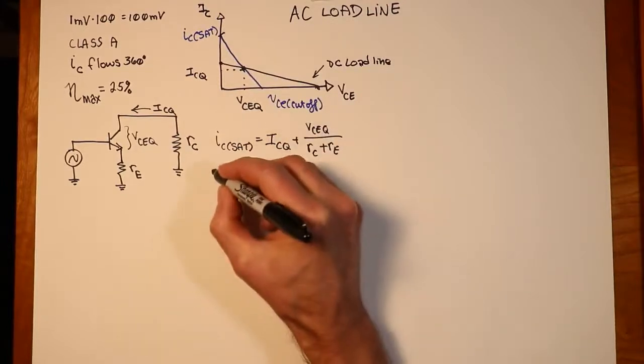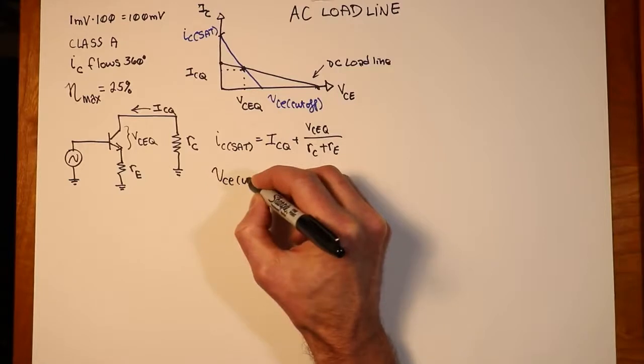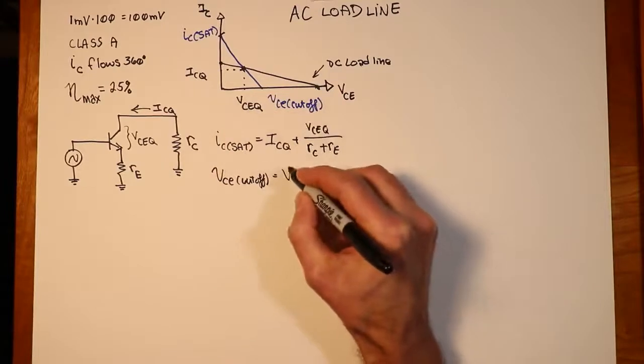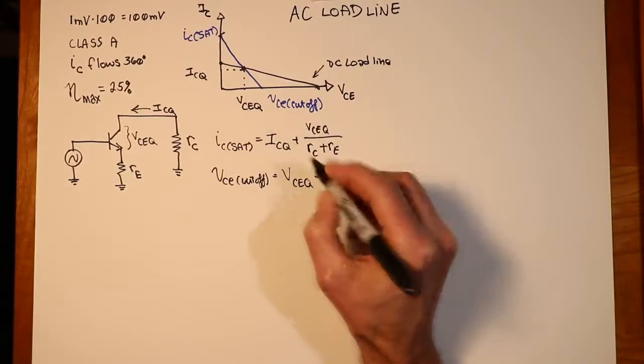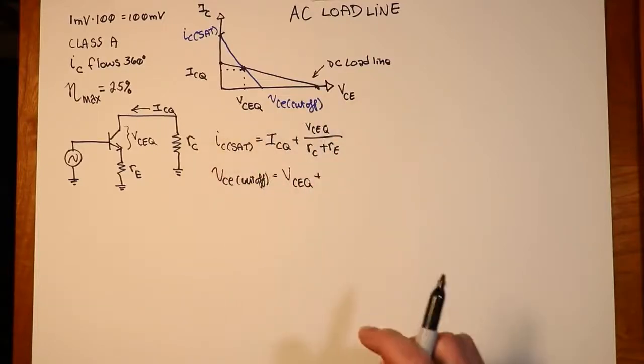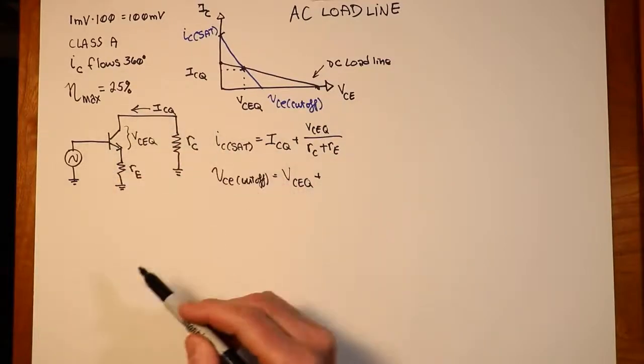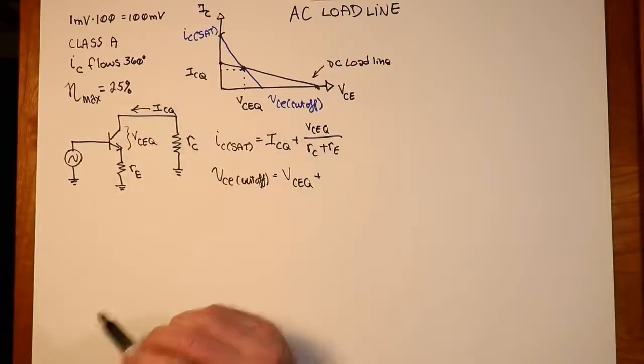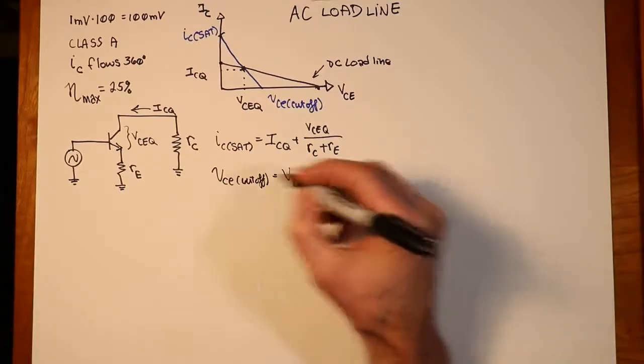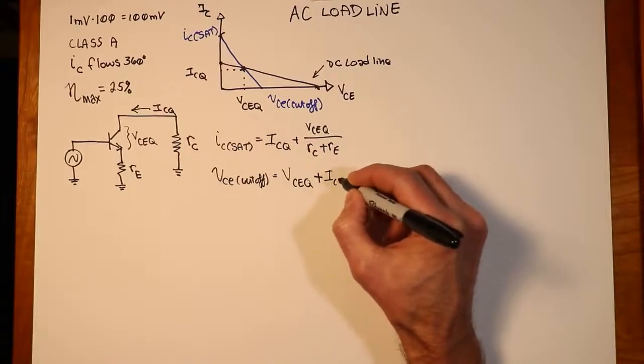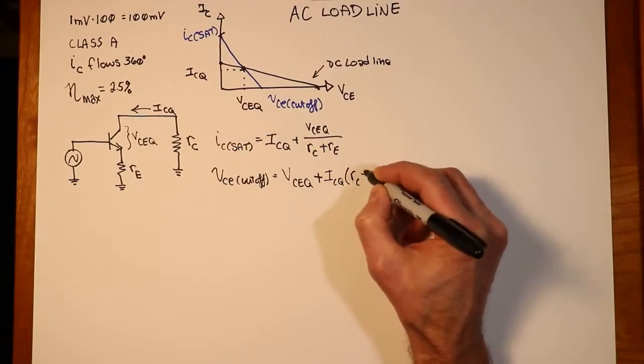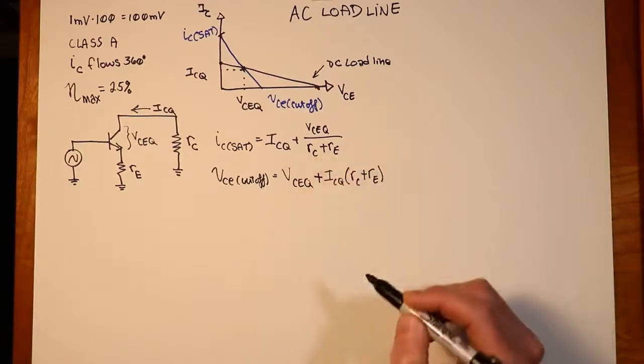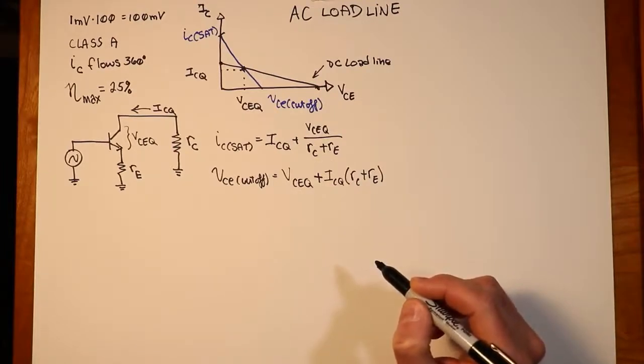And then down here for cutoff, we have a similar sort of situation. We have VCE Q as one part of it. And then we have the second piece, from VCE Q up to cutoff. So what is that? Well, again, I come back to my original circuit here. The extra voltage that we can get is dictated by ICQ and the sizes of these resistors again. So we have, once again, a little Ohm's law relationship. We would just say that's equal to ICQ times the two resistor values, RC plus RE. Again, I want to reiterate that most likely one of these, RC or RE, is going to be zero in the average circuit.